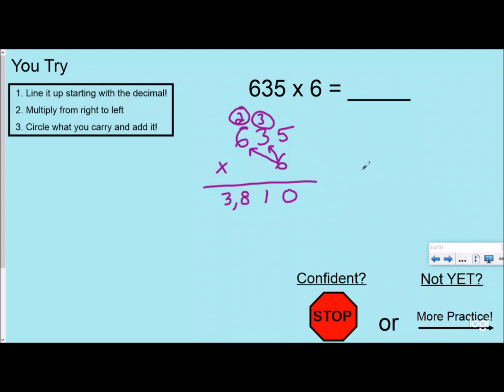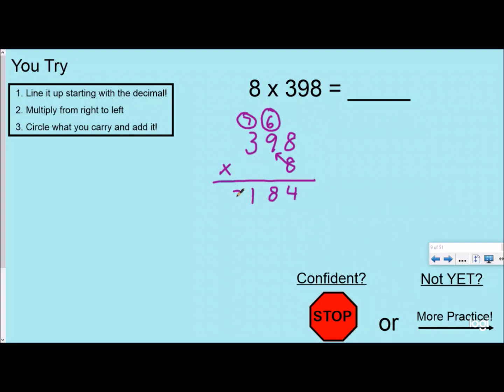So let's take a look at our next you try problem. If you're confident, go ahead and stop and work on whatever your teacher would like you to work on. If you need an extra problem, go ahead and keep watching. So I have 8 times 398 right here. So I'm going to do my commutative property. I'm going to write my bigger number on top just because it makes it a little bit easier for me. And I'm going to line that up. Hopefully you have tried this already. If not, go ahead and pause the video, and you can try it. So I have 8 times 8 is 64. I'm going to regroup my six groups of 10 over here. I'm going to put my leftovers four down here. 9 times 8 is 72, plus 6 is 78. Remember, you always multiply, then add. 8 times 3 is 24, plus 7 is 31. So my product is going to be 3,184.